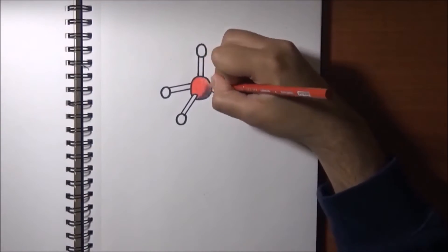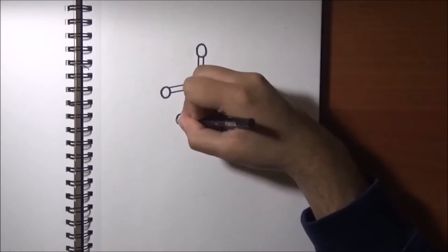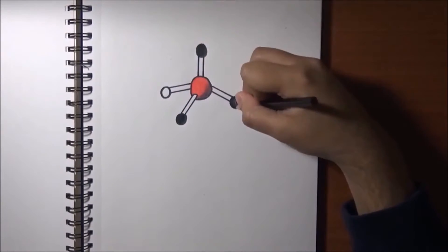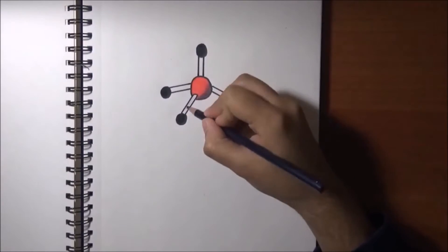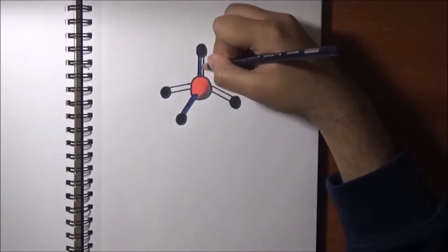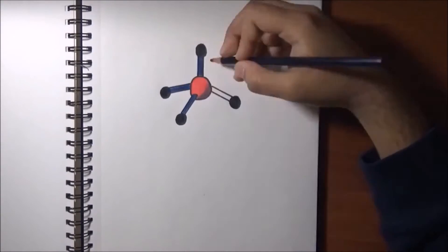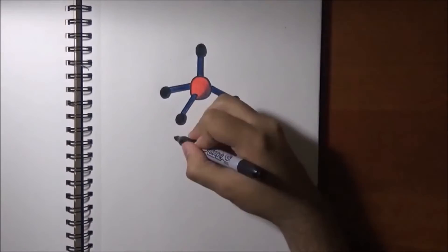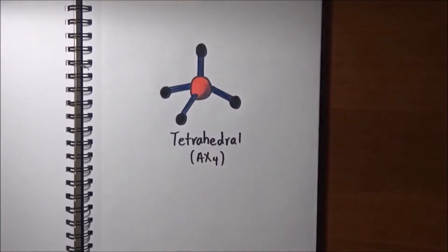The tetrahedral arrangement of electron groups forms a bond angle of 109.5 degrees. There are a total of three shapes, including the main shape, which falls under this class. Some examples of the tetrahedral shape are methane and carbon tetrachloride.